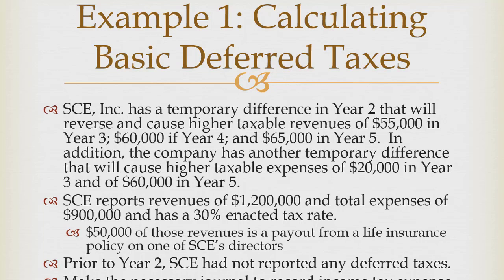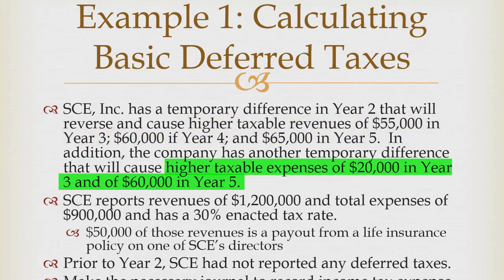This is SE Incorporated. They have two temporary differences to look at. According to their tax department, the first will cause higher taxable revenues in future years: $55,000 in year three, $60,000 in year four, and $65,000 in year five. In addition, there's a temporary difference that will lead to higher expenses in the future — $20,000 higher in year three and $60,000 higher in year five.